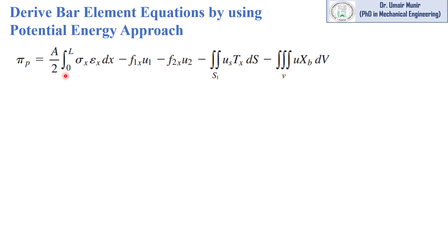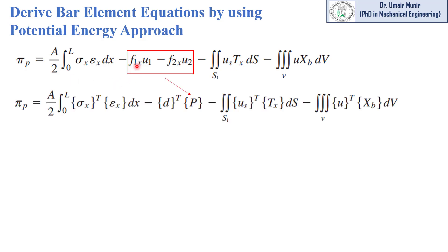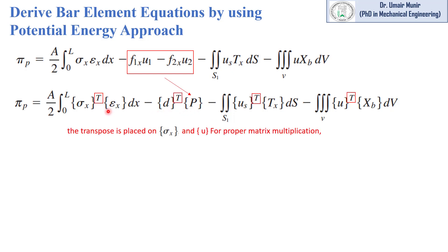We have the equation for total potential energy. In this equation, the nodal force multiplied by the nodal displacement can be replaced by a matrix P, the nodal matrix of nodal forces. We have placed transpose on the stress matrix and displacement matrices for proper multiplication of matrices, as will be shown in the coming slide.